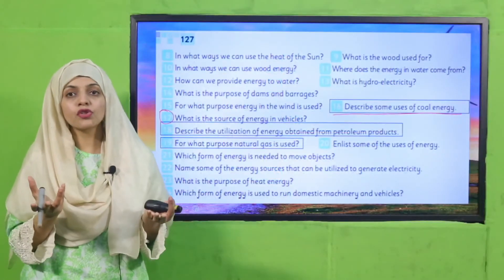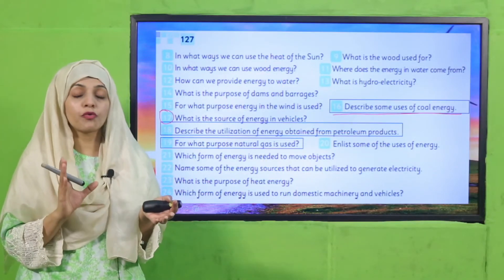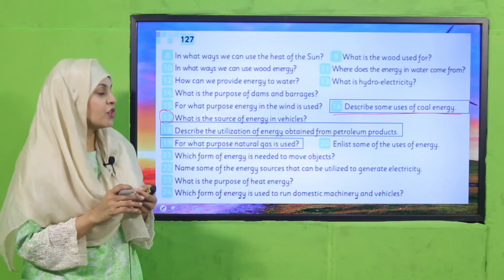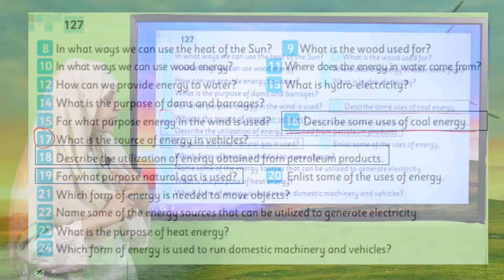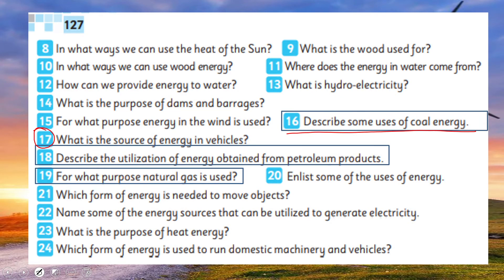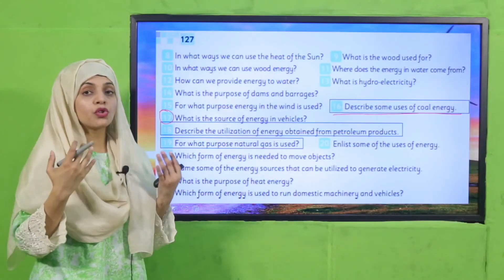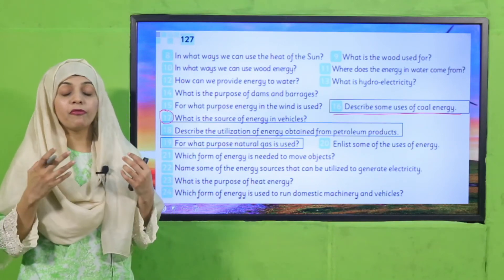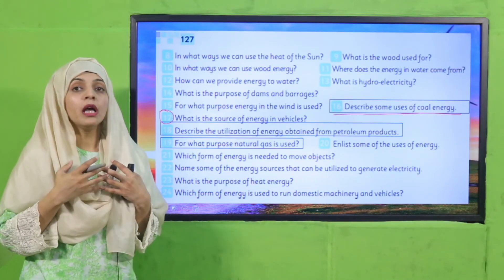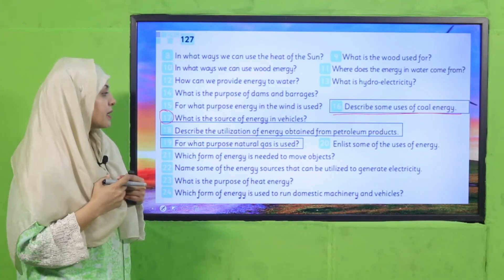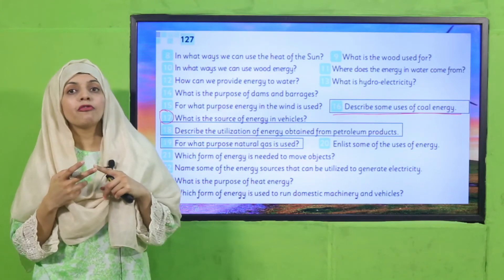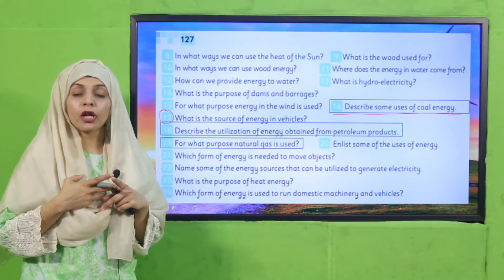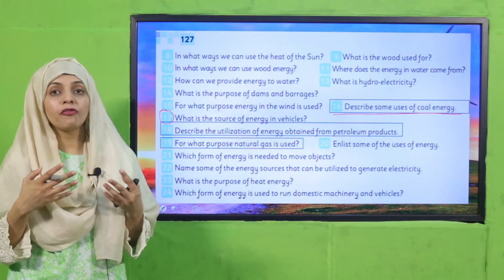Coal is used for heat production and also for the production of electricity. What is the source of energy in vehicles? Fuel — very good. Describe the utilization of energy obtained from petroleum products. It is used as fuel for cars, to generate electricity, and for heat production. What purpose is natural gas used for? For cooking, heating, production of electricity, and it is also used as fuel for cars and vehicles.